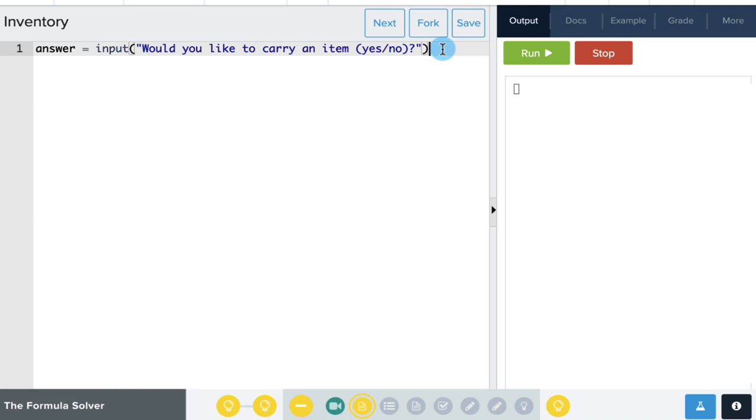Using an if else statement, we can help our program make decisions based on the user's input. So we can have an if statement that says, if the answer is equal to yes, we can print some things we have in inventory. So let's say we have a couple of things: Seeds, and we also have a hammer.